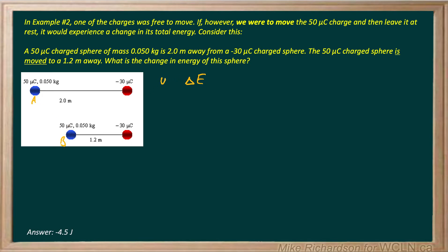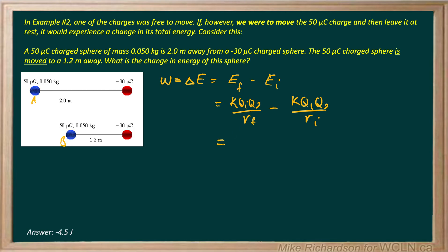We know that change in energy is work. Change in anything is always final minus initial. Since all we're talking about is potential energy — assuming no velocities involved — my final potential energy will be KQ1Q2 over R final, minus KQ1Q2 over R initial. I can factor out KQ1Q2 since it's the same in both, which makes the algebra a little easier: 1 over R final minus 1 over R initial.